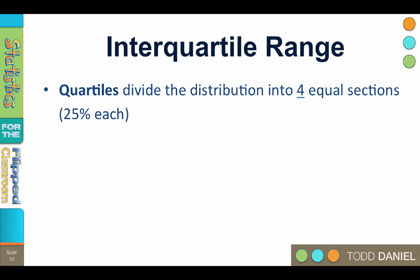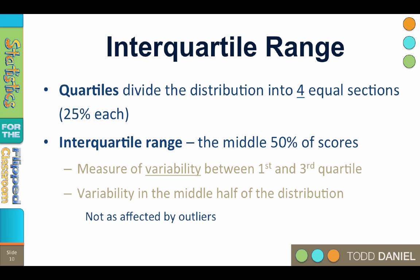The interquartile range, therefore, is the variability in the middle half of the distribution, ignoring the top 25% and the bottom 25% of the distribution.